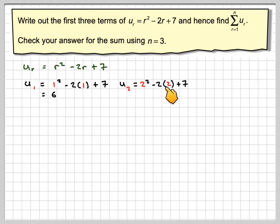U_2 will be 2 squared minus 2 times 2 plus 7. That gives me 4 take away 4 plus 7, which is 7.